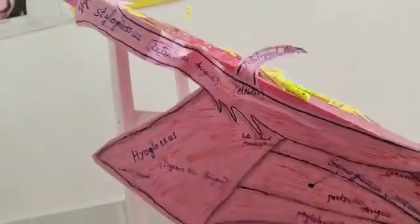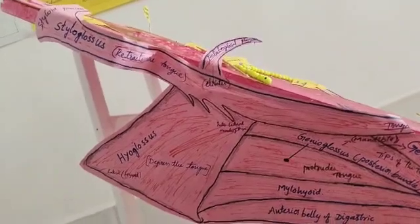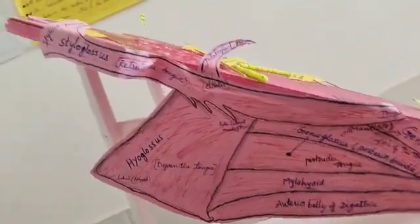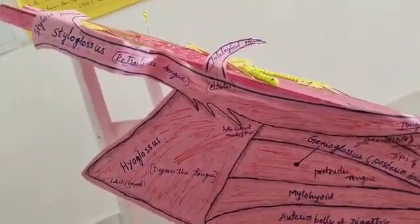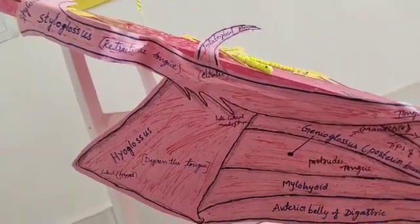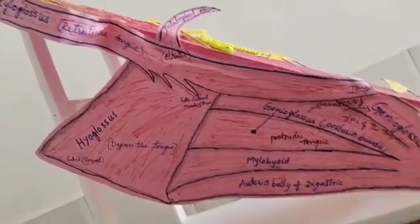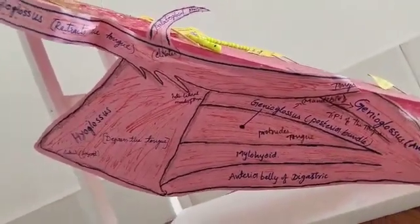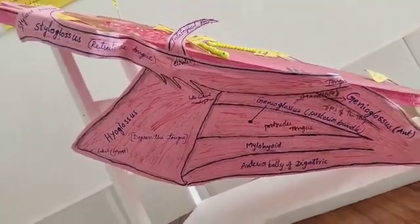Now let's look at the muscles. The tongue consists of two groups of muscles: intrinsic and extrinsic. Intrinsic muscles are four in number. They are the superior longitudinal, inferior longitudinal, transverse, and circular muscles. These four muscles are inserted into the tongue itself.